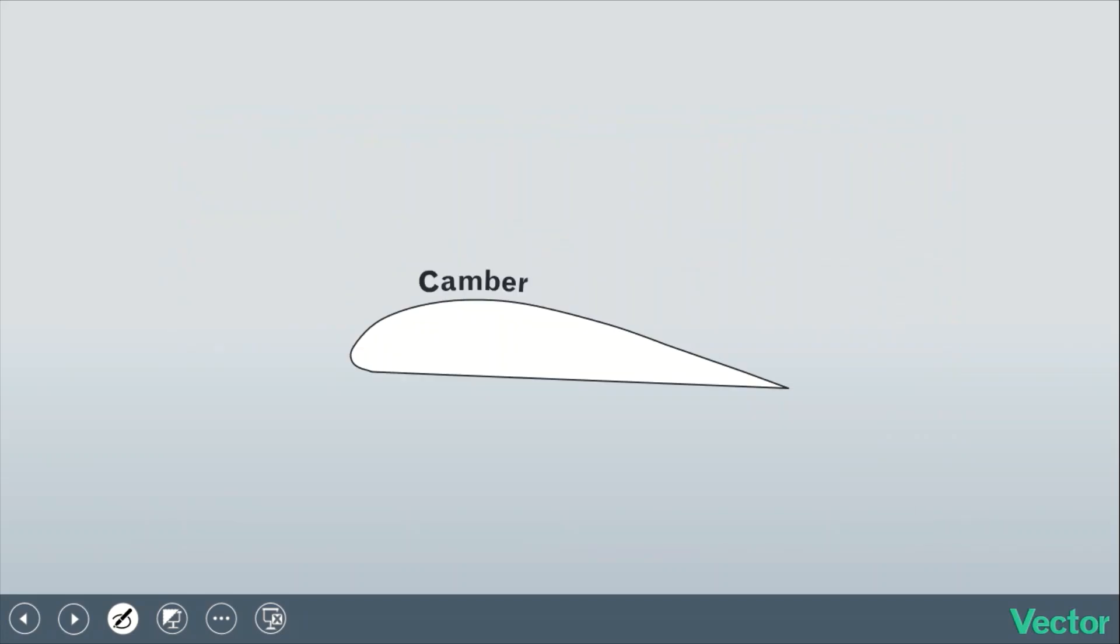The camber is basically the shape or the curvature of the airfoil. This is arguably the most important design feature, as we'll see in just a second. But first, let's talk about what happens when the air flows past the airfoil.